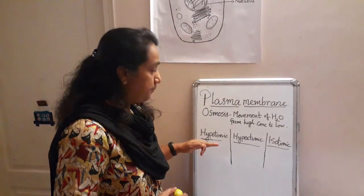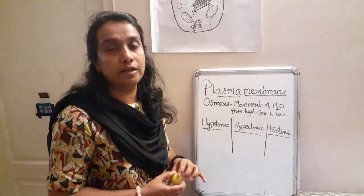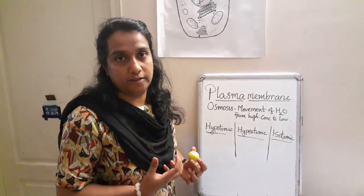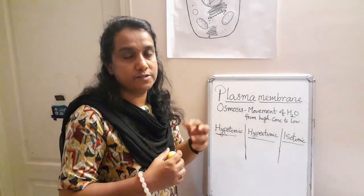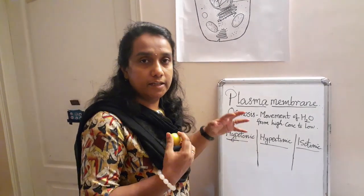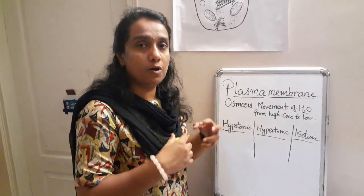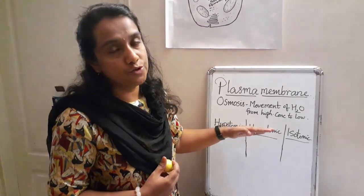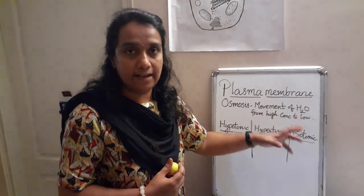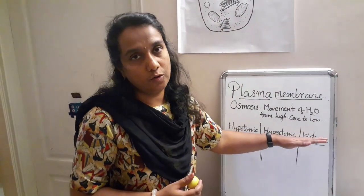Hypotonic, hypertonic, and isotonic depend upon the amount of salt in the water. If the salt content is less or absent, that will be hypotonic. If the salt content is more, the solution will become hypertonic. If both the cell and the outside concentration are the same, then it will be isotonic.